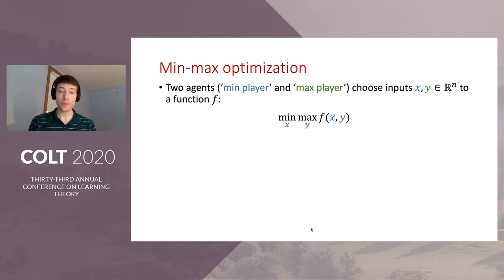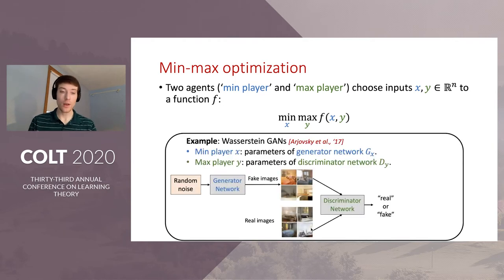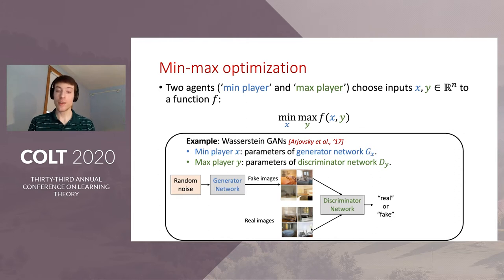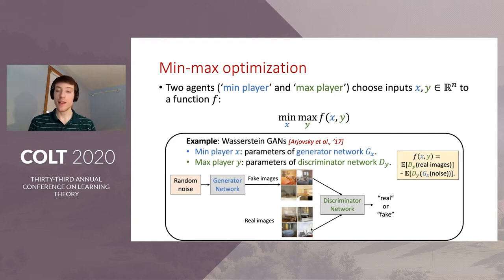This saddle point problem has many applications in modern machine learning. One example is Wasserstein-GANs. Here the min player chooses the parameters x of some generator network gx, and the max player chooses the parameters y of some discriminator network gy. Given a random noise vector, the generator passes this through its network and outputs fake images. The discriminator is trained to classify an image as real or fake. The function f is the probability that the discriminator classifies a real image as real, minus the probability it classifies a fake image as real. The discriminator wants to maximize this objective, while the generator wants to minimize it.